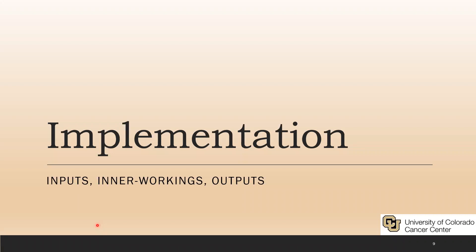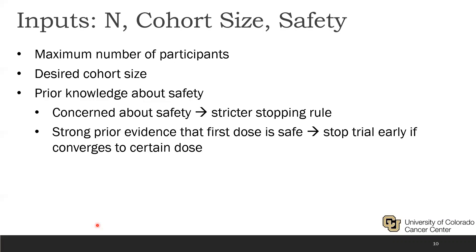Now I'll go through the details of BOIN's implementation. Biostatisticians need information from investigators: the maximum number of participants expected to enroll, the desired cohort size, and whether there is any specific prior knowledge about safety. The BOIN design has many built-in safety rules sufficient in the vast majority of cases, but if a drug raises abnormal safety concerns, we can implement stricter stopping rules.